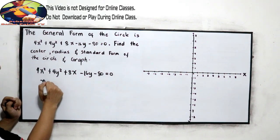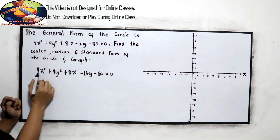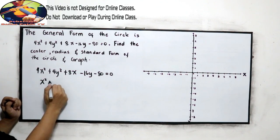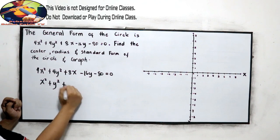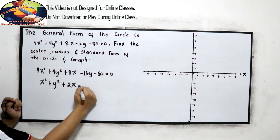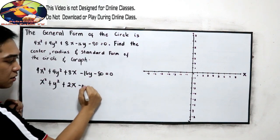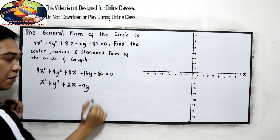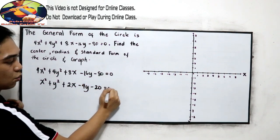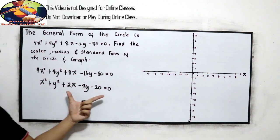4 divided by 4 will become x squared plus y squared plus 8 divided by 4 will become 2x minus 16 divided by 4, that is 4y, minus 80 divided by 4, 20 equals 0. This is now the reduced form of our general form.